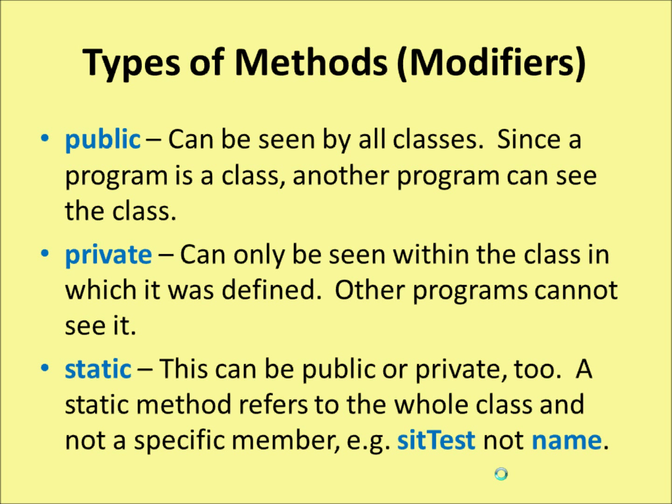And finally there are static methods. A static method can be public or private too, but it refers to the whole class and not to a specific member. For example, a test of 10 students would refer to a whole group of people, but a name would refer to a specific person within that group.